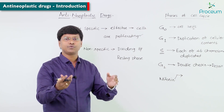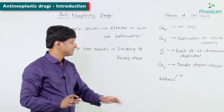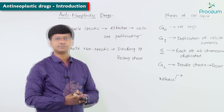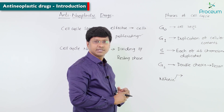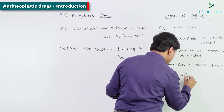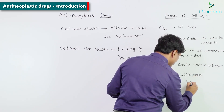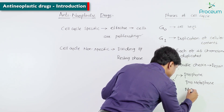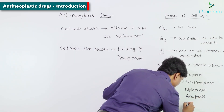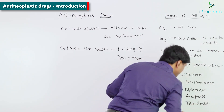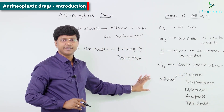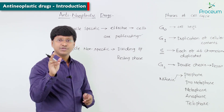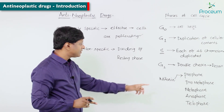The mitosis phase is where the cell duplicates into 2, 4, 8, 16, and further. The phases of mitosis include prophase, prometaphase, metaphase, anaphase, and telophase.